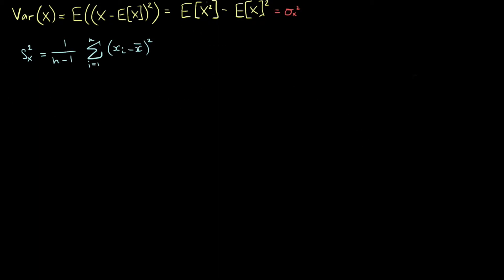This is how we define the sample variance of x. What we're going to do is rearrange this to make it more useful. The first thing we'll do is rewrite this square as literally the product of (xi minus x-bar) with itself, because that's what we mean when we say (xi minus x-bar) squared.